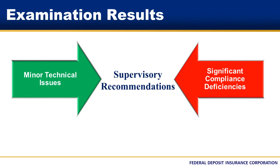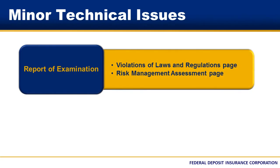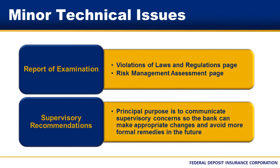The written report of examination is the principal document of record by which examination findings and conclusions are communicated to the bank. Discussion of minor technical issues may be limited to supporting report of examination schedules, such as on the Violations of Laws and Regulations page or the Risk Management Assessment page. The FDIC will communicate recommended corrective action for minor technical issues as supervisory recommendations to the bank. These recommendations are intended to inform the bank of the FDIC's views about changes needed in the bank's BSA AML practices or operations. A principal purpose is to communicate supervisory concerns so the bank can make appropriate changes and thereby avoid more formal remedies in the future.